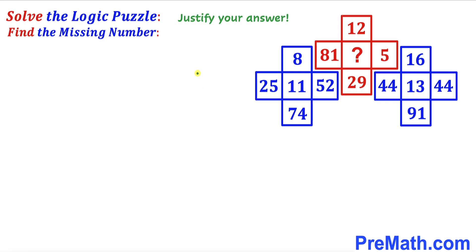Welcome to pre-math. In this video we are going to solve this interesting logic puzzle. As you can see, in these red and blue grids we have all these numbers and now we are going to find this missing number and justify our answer as well. Please don't forget to give a thumbs up and subscribe.